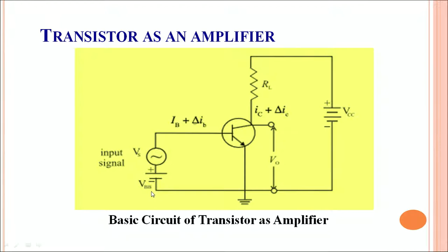The voltage VBE is enabling this part of the circuit to be in the forward bias. Apart from this, an input signal is fed to the input circuit and this input signal is to be amplified. In the forward bias it allows the base current to flow through this. Apart from IB, there is a small amount of current from the input signal which also passes through the input circuit.